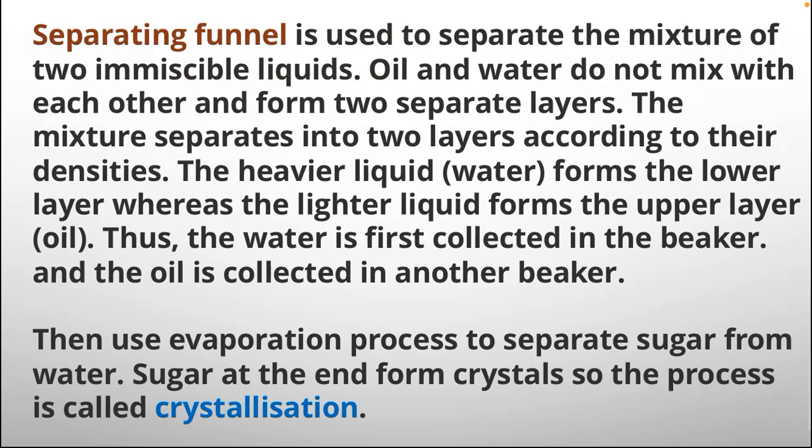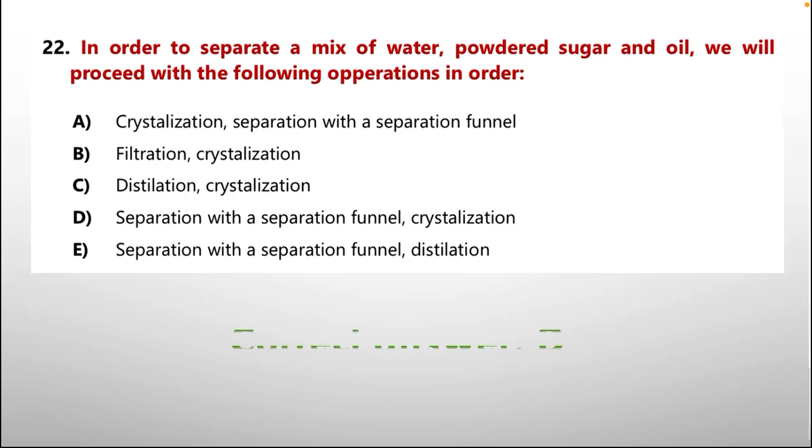Separating funnel is used to separate the mixture of two immiscible liquids. Oil and water do not mix with each other and form two separate layers. The mixture separates into two layers according to their densities. The heavier liquid water forms the lower layer whereas the lighter liquid oil forms the upper layer. Thus, the water is first collected in the beaker and the oil is collected in another beaker. Then use evaporation process to separate sugar from water. Sugar at the end forms crystals so the process is called crystallization. According to this explanation, the answer is option number D, separation with a separation funnel and then crystallization.